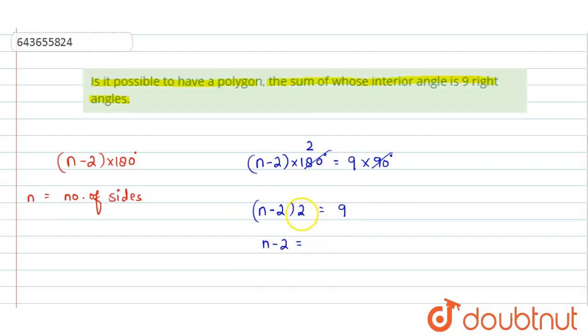And this will give us (n - 2) = 9/2. Further simplifying this equation, we will get n - 2 = 4.5, and n = 6.5, taking this minus 2 to the RHS. So n is coming out to be 6.5, and 6.5 is not a natural number.